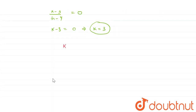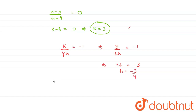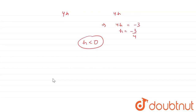Substituting K = 3 into K/(4H) = −1: 3/(4H) = −1, so 4H = −3, giving H = −3/4. Therefore we have K > 0 and H < 0, which means point C lies in the second quadrant.